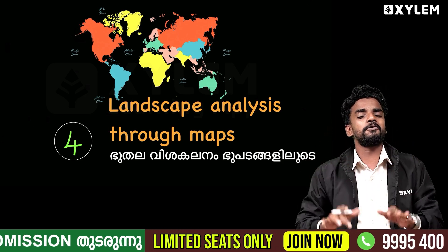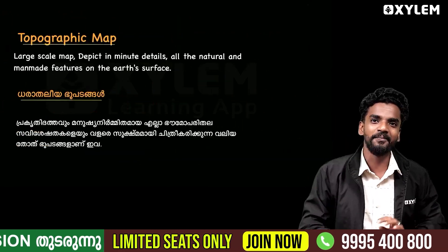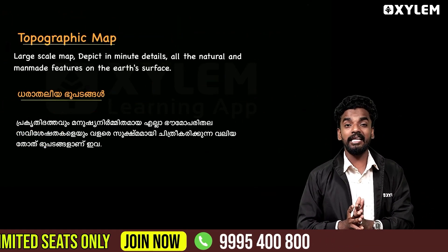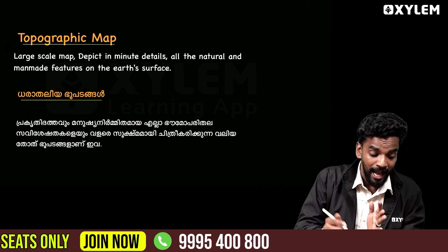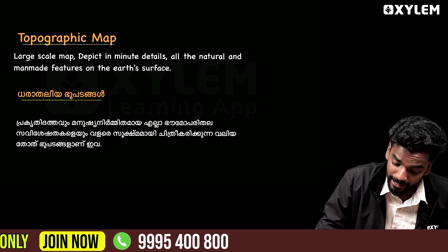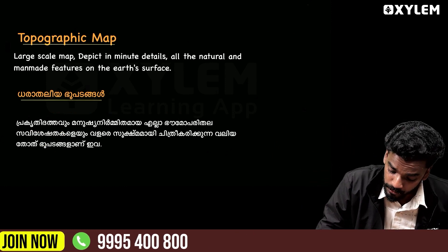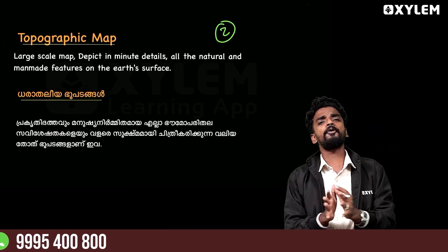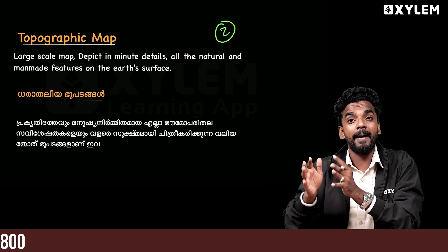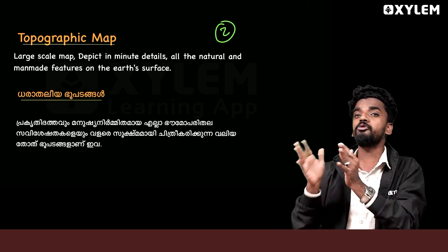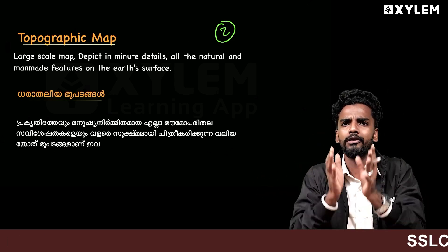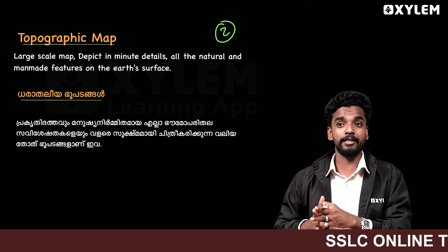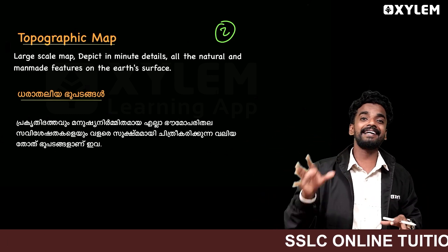The first question is: what is a topographical map? A topographical map is a large-scale map that depicts minute details of all natural and man-made features of the Earth.